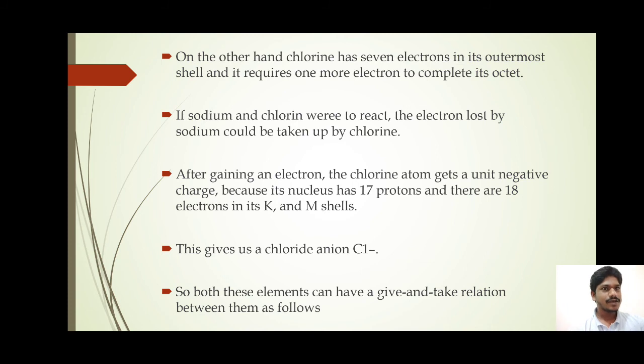Similarly, if you take chlorine, the atomic number is 17. The electronic configuration is: K shell has two, L shell has eight, and M shell has seven. Is it easy to lose seven electrons or to gain one electron? Obviously, it is very easy to gain one electron rather than losing seven electrons. Chlorine is going to gain one electron which is lost by sodium.